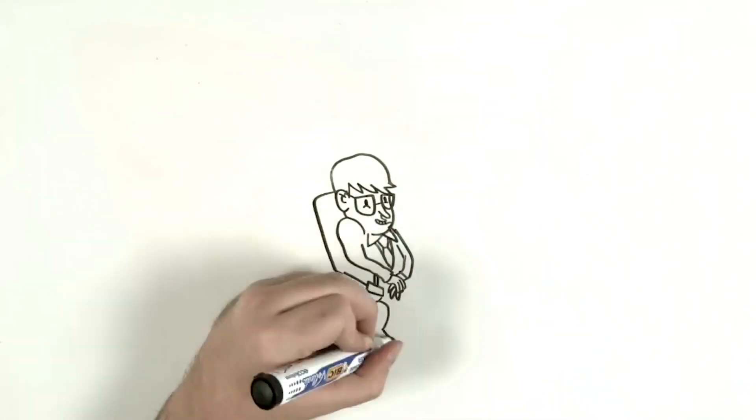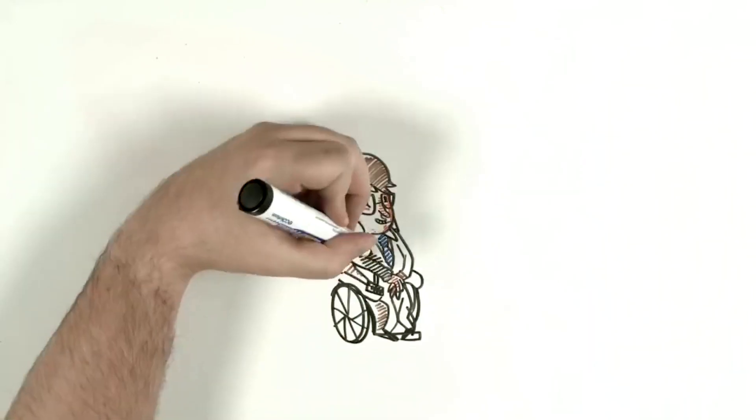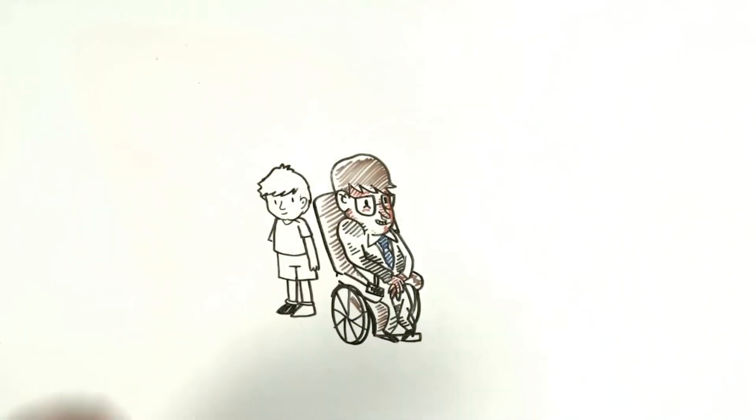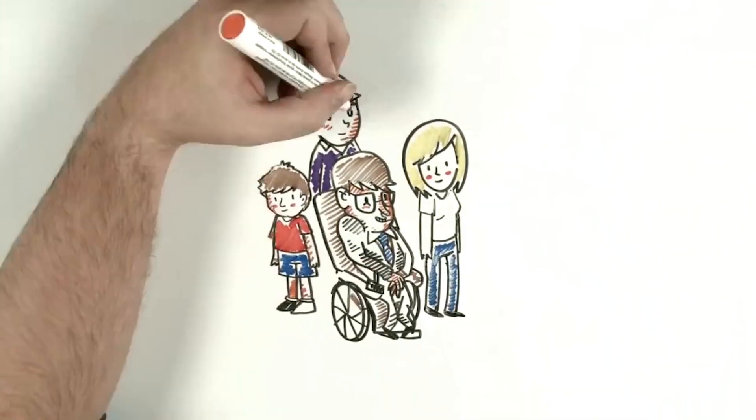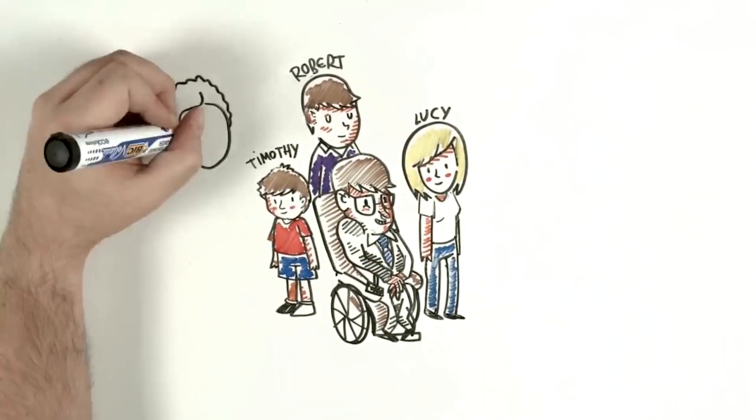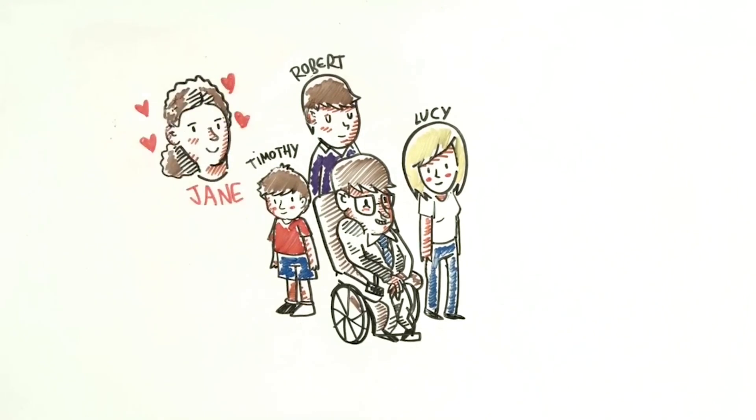After 25 years, his marriage to Jane ended and Hawking began a relationship with his nurse Elaine Mason, to whom he was married for 17 years until 2007. He then lived on his own, and Jane and their three children, Robert, Lucy and Timothy, would visit him regularly.